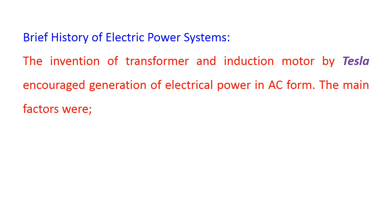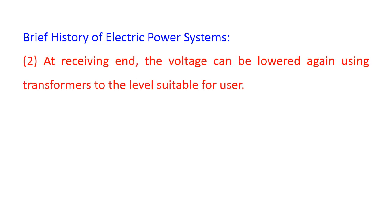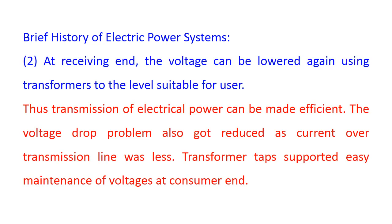Transformers are static machines and can be used for raising and lowering AC voltages very efficiently. Thus AC power can be generated at remote locations, the voltage raised using transformers, and power transmitted over long distances efficiently, as the current needed to transmit the same power at higher voltage is less. At the receiving end, the voltage can be lowered again using transformers to a level suitable for the user. Thus, transmission of electrical power can be made more efficient, and the voltage drop problem is reduced. Transformer taps also support easy maintenance of voltages at the consumer end.